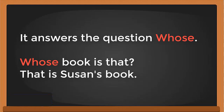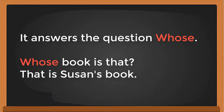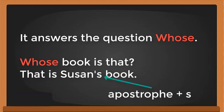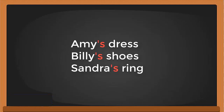A possessive noun also answers the question 'whose.' For example, 'Whose book is that?' — 'That is Susan's book.' The answer uses a proper noun, Susan. As taught in the previous video about proper nouns, if you use a proper noun it is followed by an apostrophe-s.